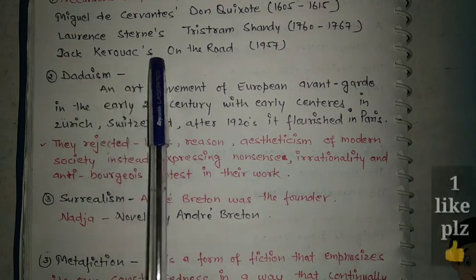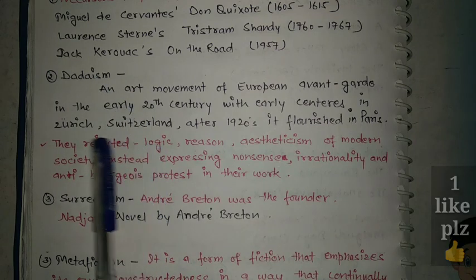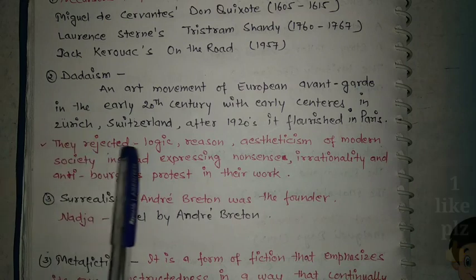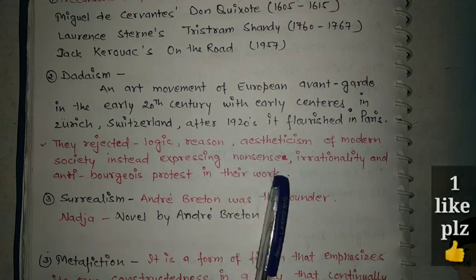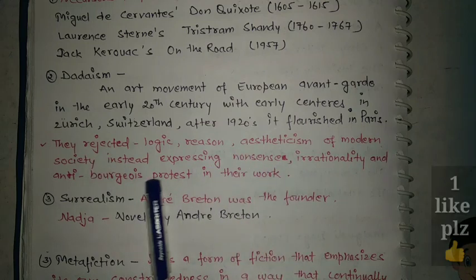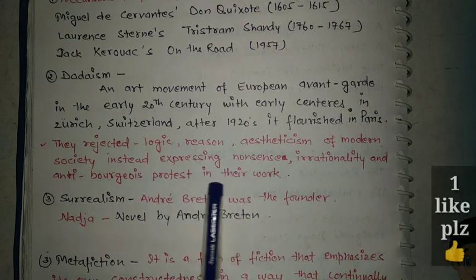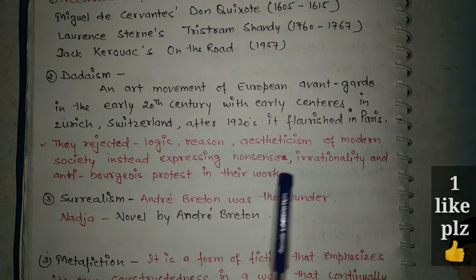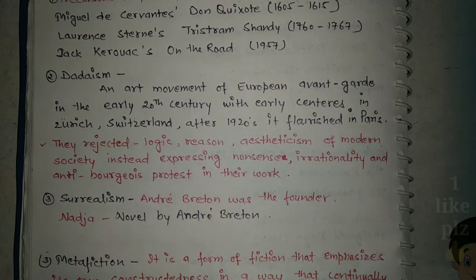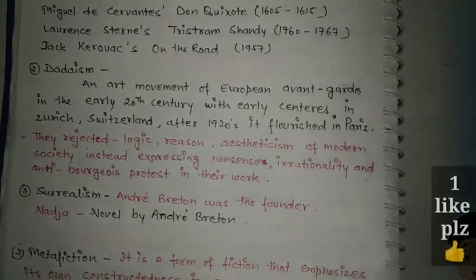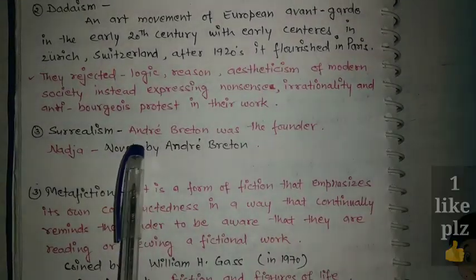If asked whether Dadaism is associated with postmodernism, and what their specialities were — their specialities include expressions of nonsense, irrationality, and anti-bourgeois protest in their work. So Dadaism is linked to postmodernism through its rejection of rational and aesthetic norms.